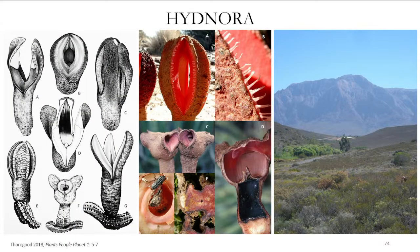This is one of the strangest plants in the world. Rafflesia is very strange — but this is the strangest plant in Africa. It is called Hidnora, and it grows in the semi-deserts. It's a parasite of Euphorbia.